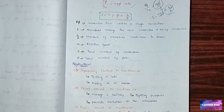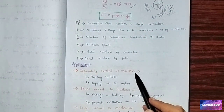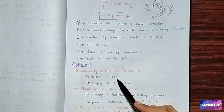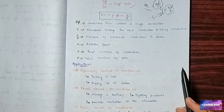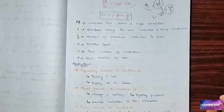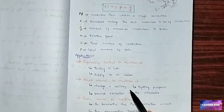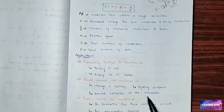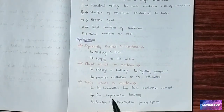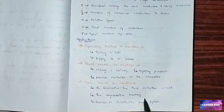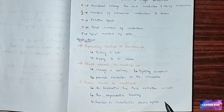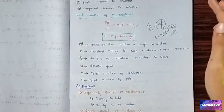Now the applications of DC machines: separately excited DC machines are used in labs and to supply DC motor currents. Shunt wound DC machines are used to charge batteries, for lighting purposes, and to provide excitation to alternators. Series wound DC machines are used in locomotives for field excitation current, for regenerative braking, and as boosters in distributed power systems.